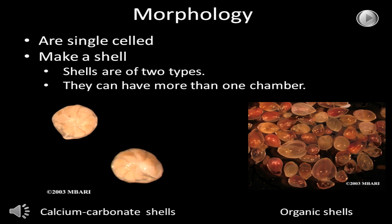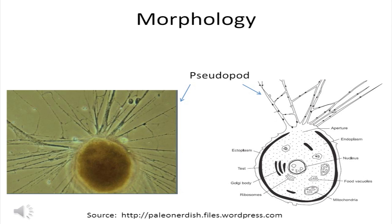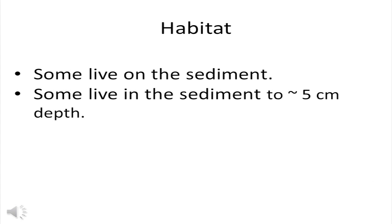The shells can be of two types: some are built of calcium carbonate, and some are built of organic material. Sometimes forams appear to have multiple chambers, but this doesn't change things — they are still single-celled animals. The second most important feature of the foraminifera is their pseudopods, which are cell material that extend through the holes in the shell and out into the environment. Some forams live on the sediment surface; some live in the sediment to about 5 centimeters in depth.